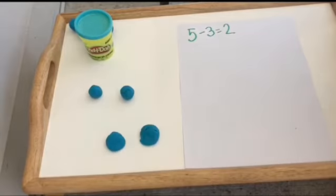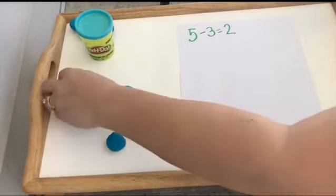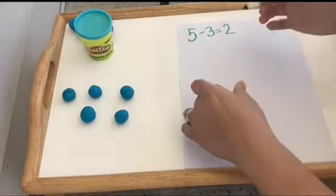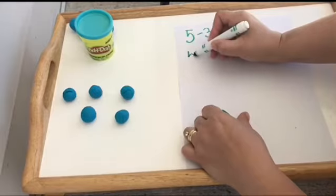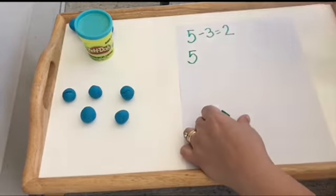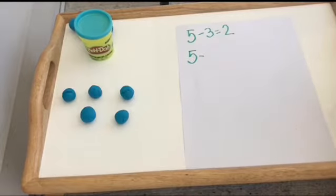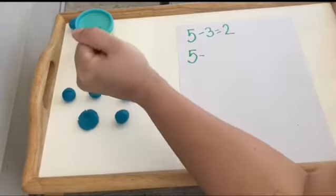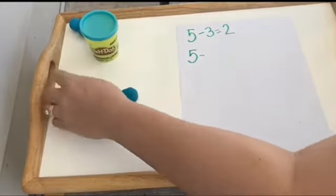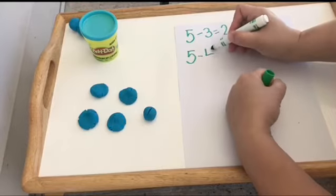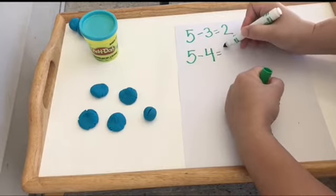I'm gonna roll these back up again. Try starting with 5 a different time. Okay, this time I'm gonna start with 5 and I'm going to take away 4 because smashing them is pretty fun. 1, 2, 3, 4. Oh, I have one left. 5 minus 4 equals 1.